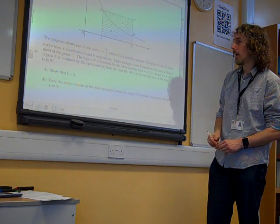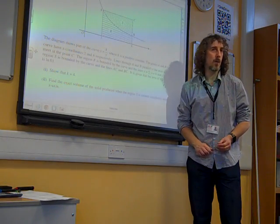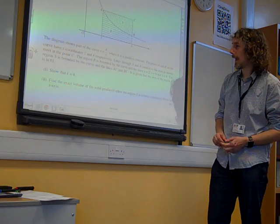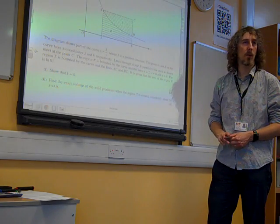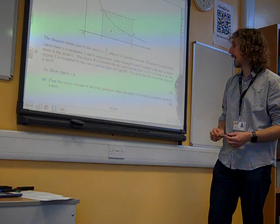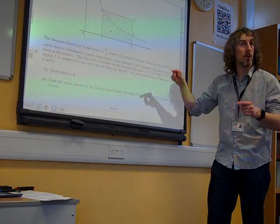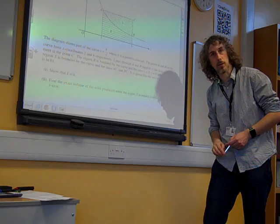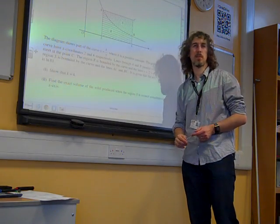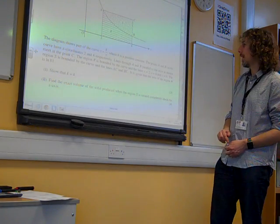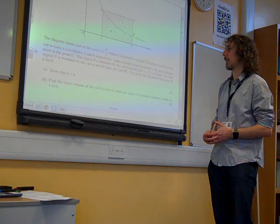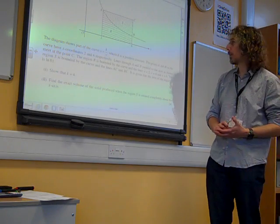OK, here we go with Question 4. The diagram shows part of the curve y equals k over x, where k is a positive constant. The points a and b on the curve have... The whole screen's on the camera, isn't it? Pretty much. Great. Lines through a and b are parallel to the axes, as shown, and they meet at the point c.